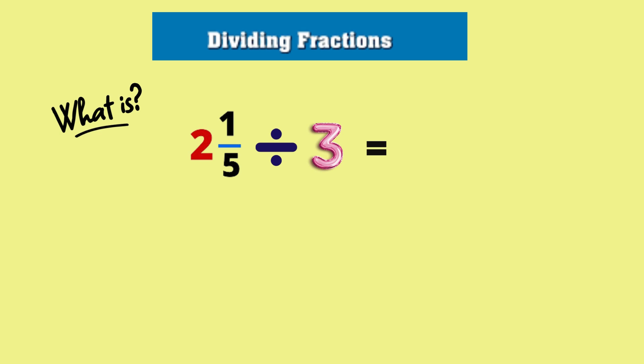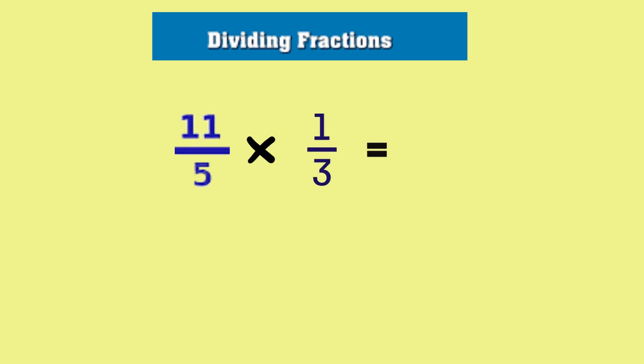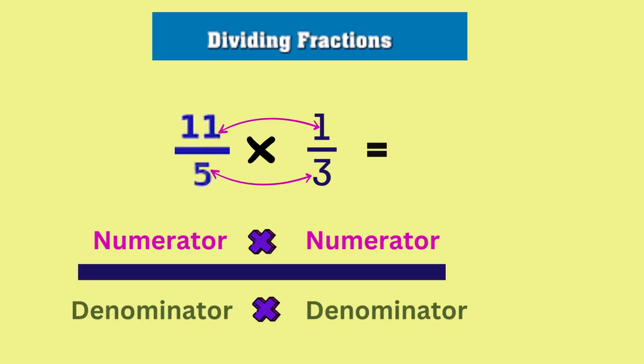Two and one-fifth divided by three. First, we need to convert the mixed fraction to eleven-fifths. Then rewrite three as three over one. In applying the rule, we reciprocate what we are dividing by to get one-third. So the problem is now eleven-fifths times one-third. This gives us eleven-fifteenths.